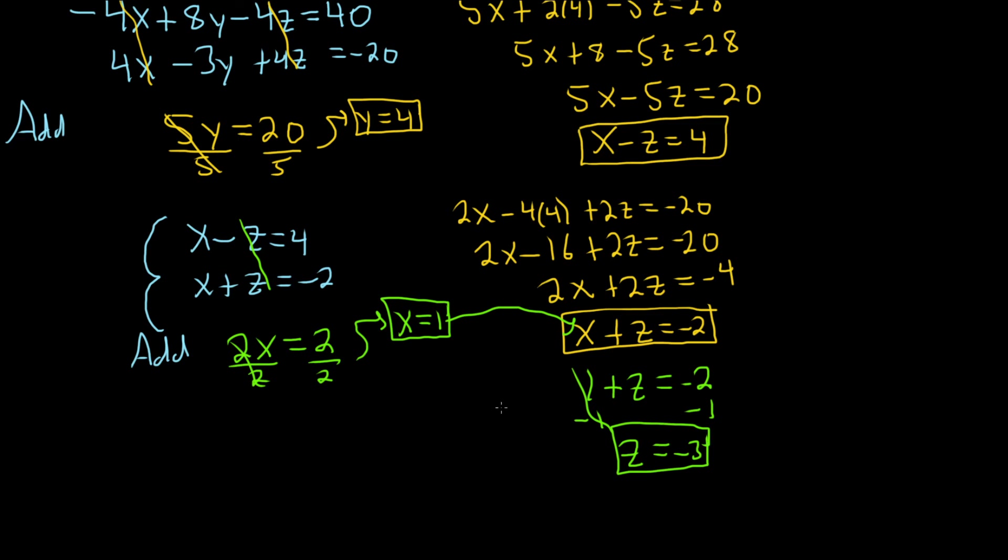So that's the answer. Everything in a box is an answer. It's better to write your answer as an ordered triple. It's a point in actual space. So it's x, y, z: 1, 4, negative 3. That would be the final answer.